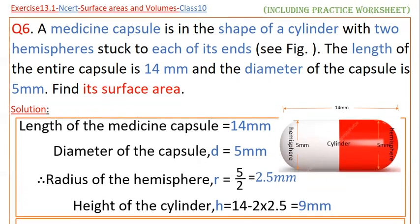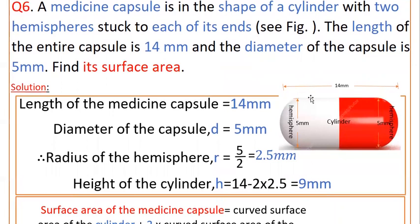And here the height of the cylinder. This is the height of the cylinder excluding the hemispheres. So height of the cylinder h equals 14 minus 2 times this radius. This is diameter and this is radius.